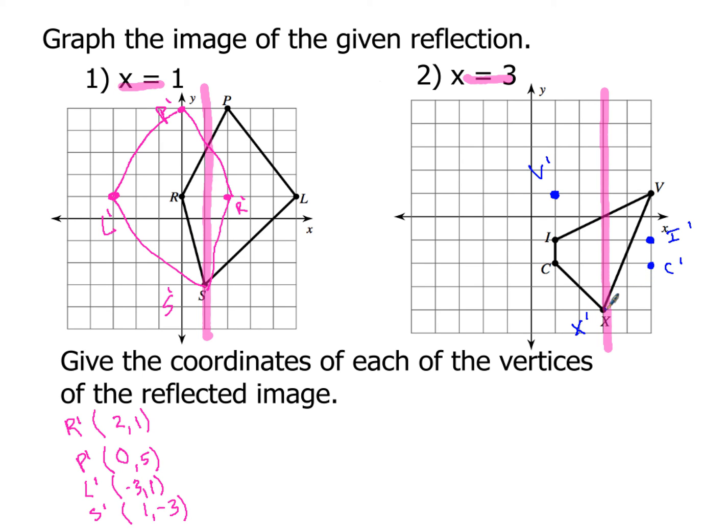So again, go ahead and connect the dots with your best straight line possible. And then go ahead and list the coordinates. And we'll start this time with point V prime. And we'll go around again in a clockwise fashion. So V prime will have the coordinates. I prime will have the coordinates. C prime will have the coordinates. And X prime will have the coordinates. So that's all you have to do to graph an image given its reflection or to give the coordinates of each of the vertices of the reflected images.